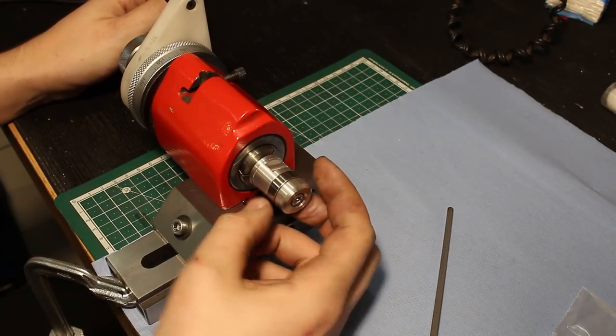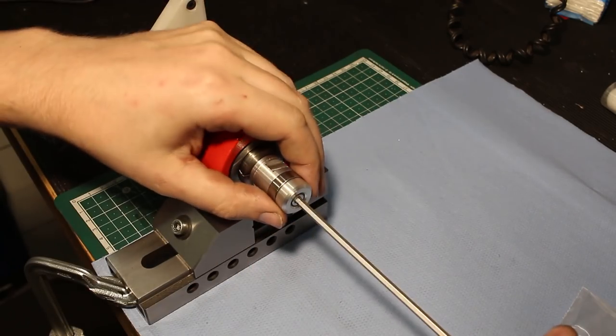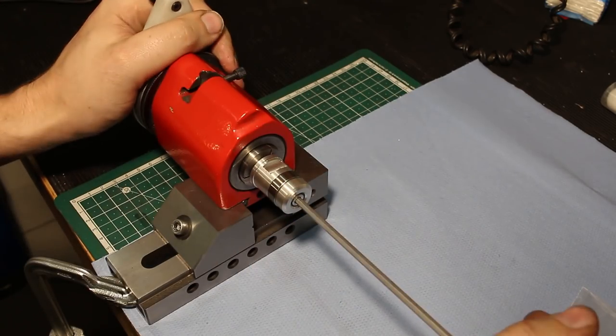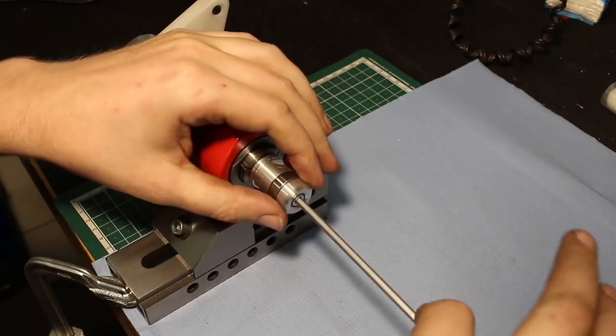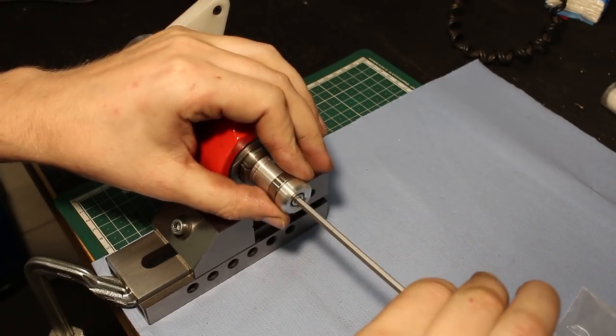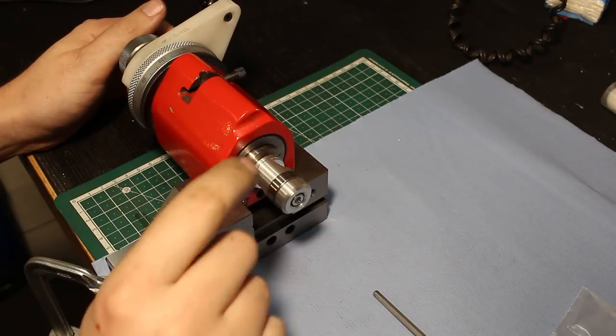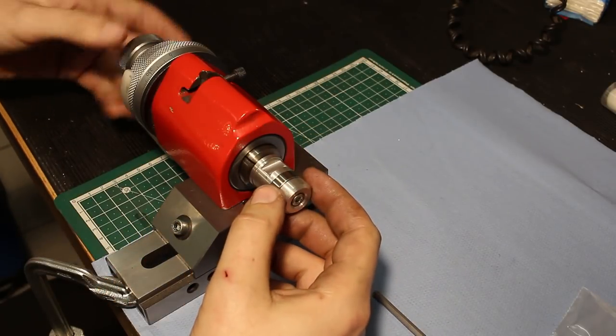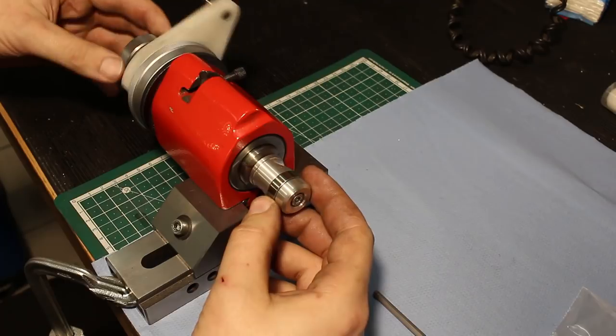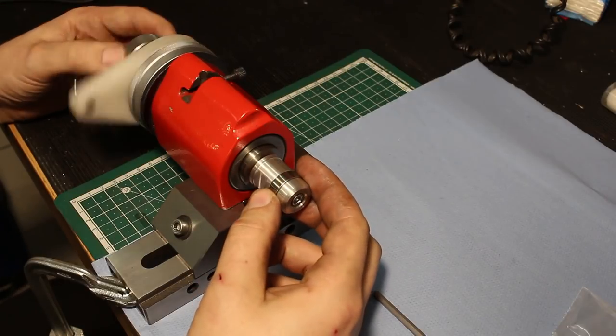That's the reason why the recess on the arbor itself is one tenth of a millimeter smaller, so I can loosen the screw and tighten it very lightly. I can come in with an indicator and knock the bearing true, so the OD of the race is true.